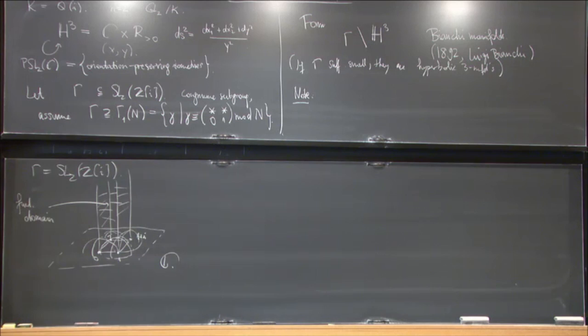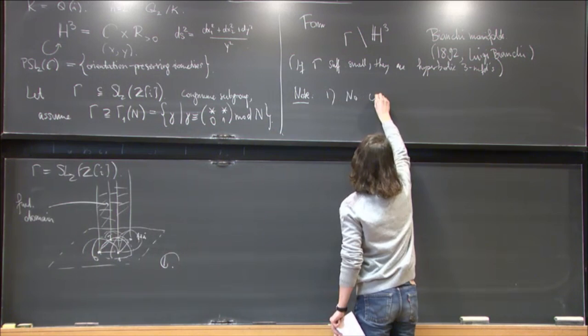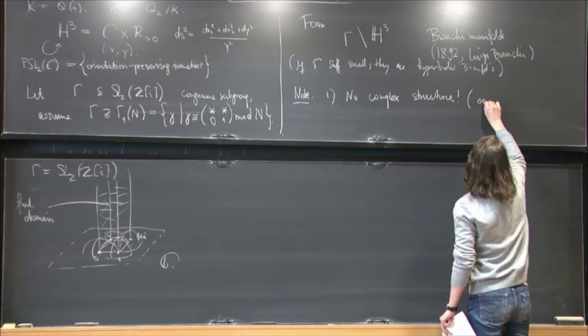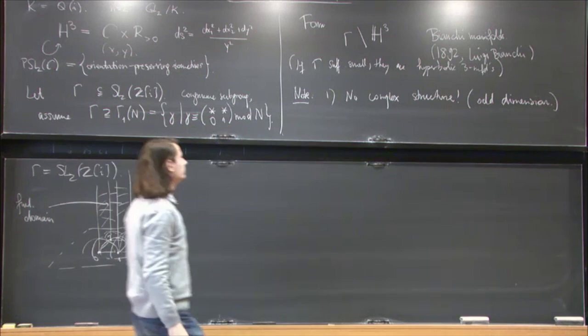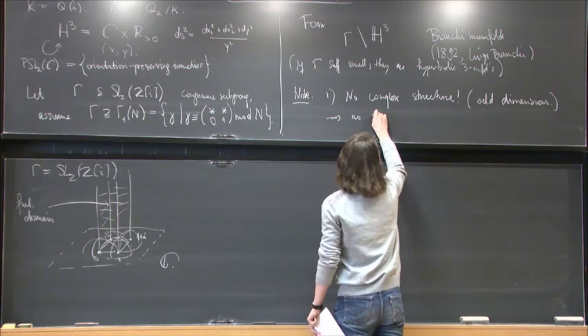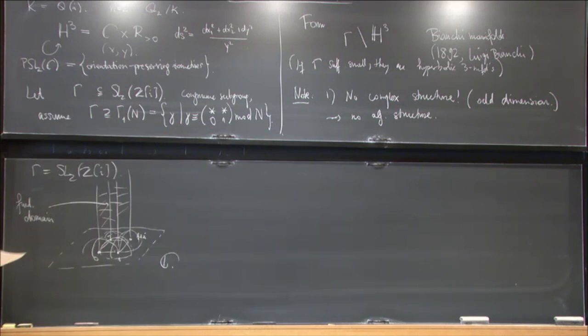Okay. And so I wanted to make several remarks in which this situation is very different from the case of the modular curve we looked at last time. So first of all, for obvious reasons, there's no complex structure on this guy. Simply for the reason that it's of odd dimension, so there's no chance. And so there's no algebraic structure.